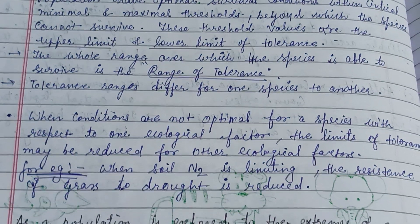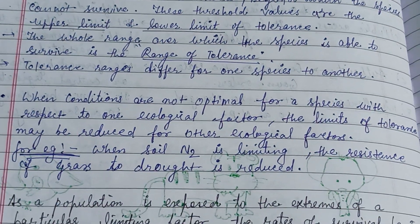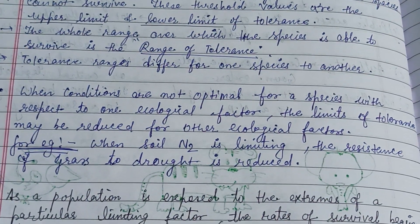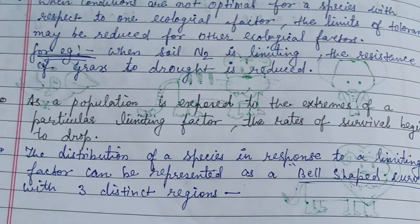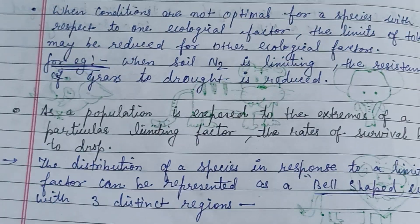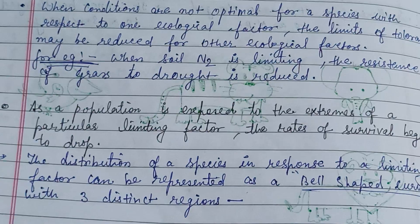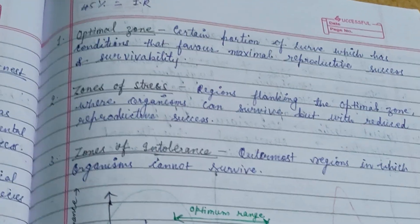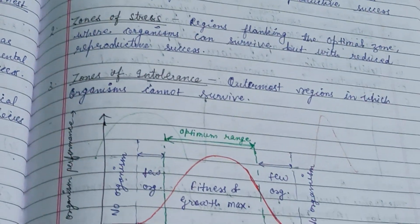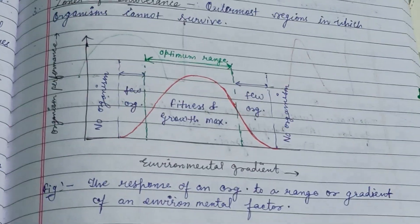According to Schaeffer's Law of Tolerance, there is an upper limit and lower threshold value on the gradient beyond which the species cannot survive. There are three zones of the bell-shaped curve: the optimal zone, the zone of stress, and the zone of intolerance.